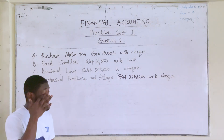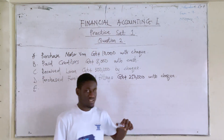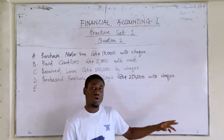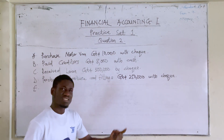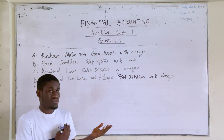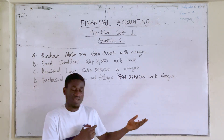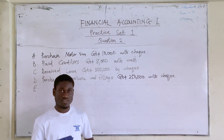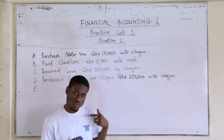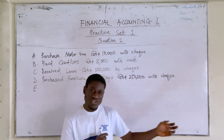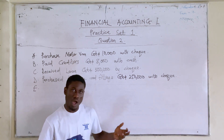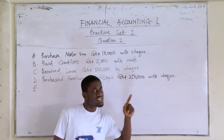Our debtors — the people who owe us — were owing us 376,000, and now they are owing us 216,000. They decreased from 376 to 216, meaning they've settled their debt. Our bank also increased from 94,000 to 254,000, so the cheque amount increased. That means they paid their debt by cheque, so we received 160,000 from debtors by cheque.